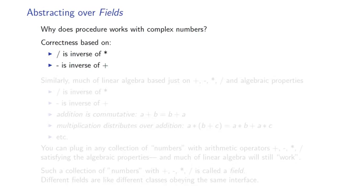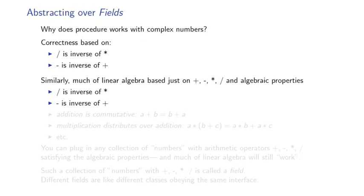Similarly, much of linear algebra is based on a few simple facts about the operators plus, minus, times, and divide. Division is the inverse of multiplication, subtraction is the inverse of addition, and other algebraic properties such as addition is commutative. The order doesn't matter. And multiplication distributes over addition.